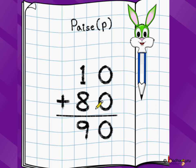We had 10 paisa, we got 80 more paisa, so we have 90 paisa, not 90 rupees, 90 paisa because both were paisa. Let's take another problem.